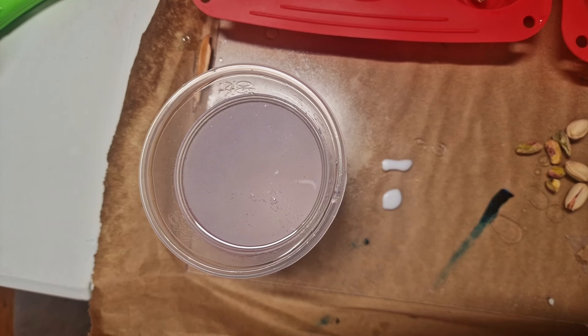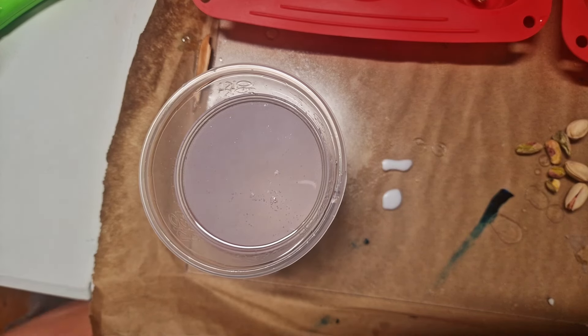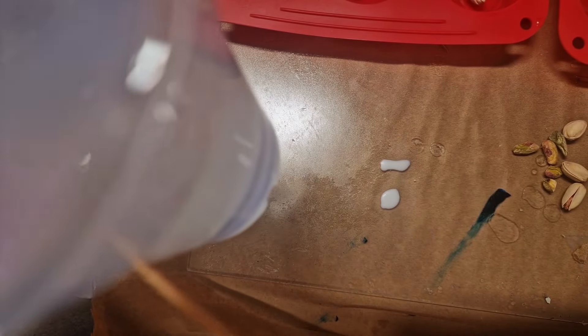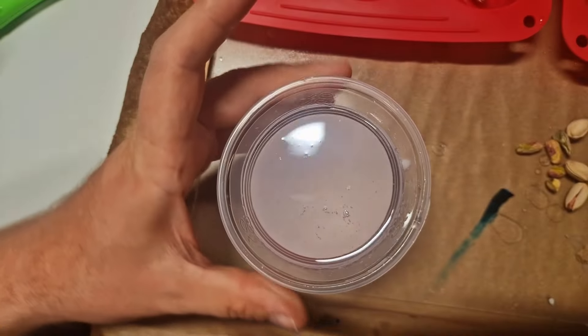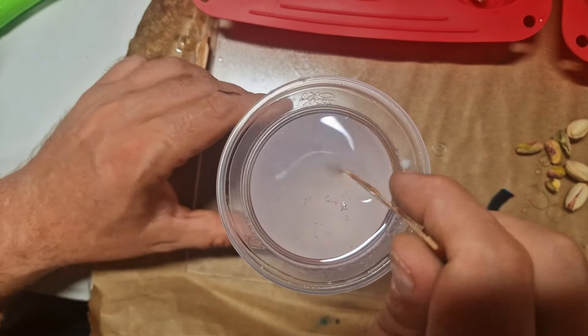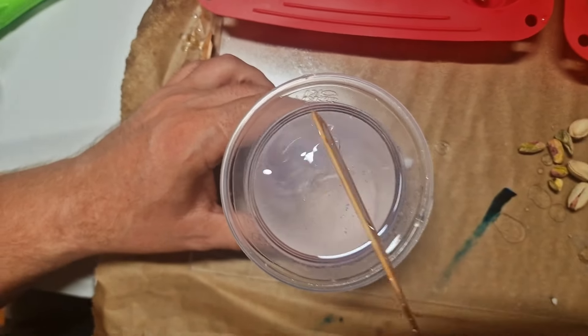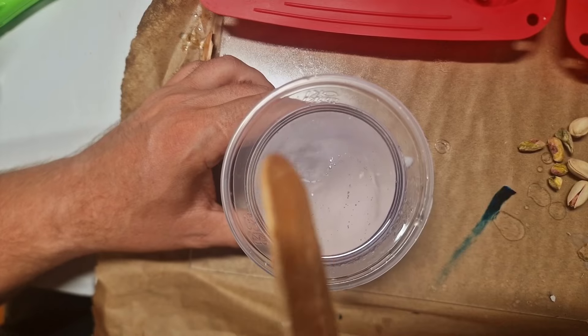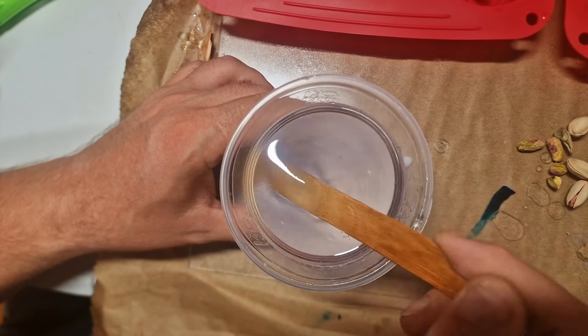So I poured my part A and part B in the cup right here and now it looks extremely cloudy. I put my spatula in there and this is a household resin, not the jewel casting resin. You can pour this resin up to one inch.